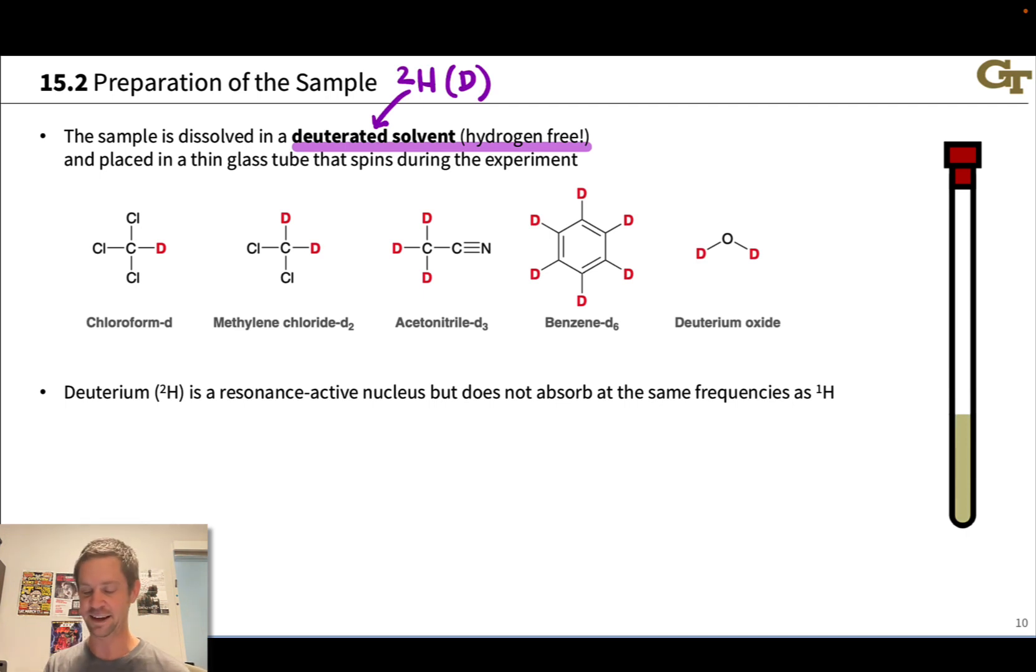Benzene D₆, and then deuterium oxide is an interesting one. This is water in which the two H's of water have been replaced with deuteriums. For that reason, you'll sometimes hear this referred to as heavy water. It's water, but with a couple of extra grams per mole in there due to the deuteriums.